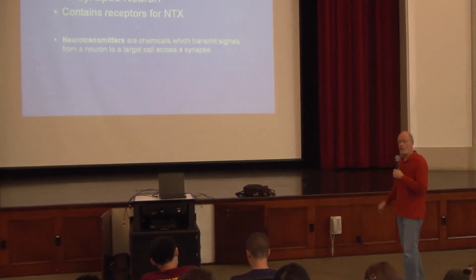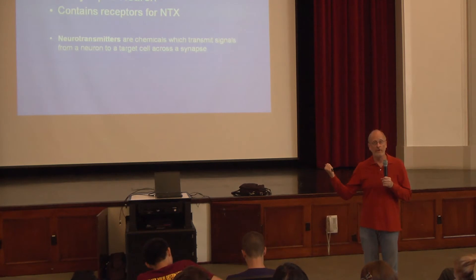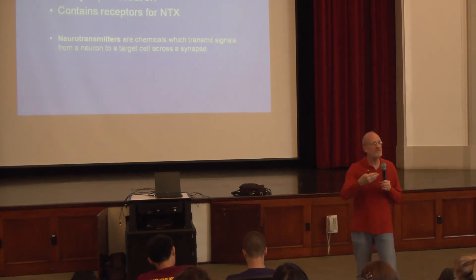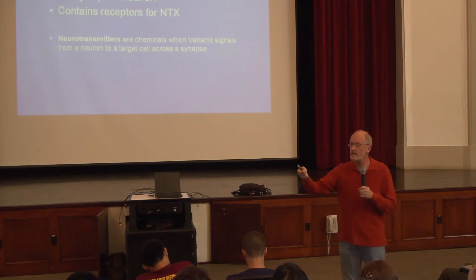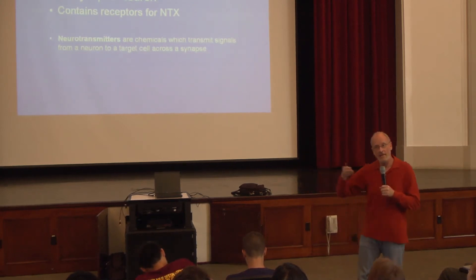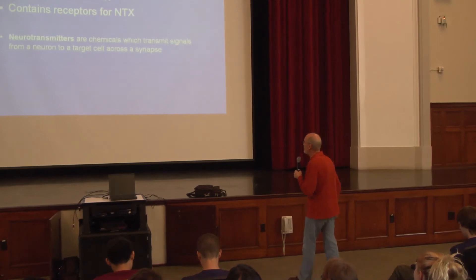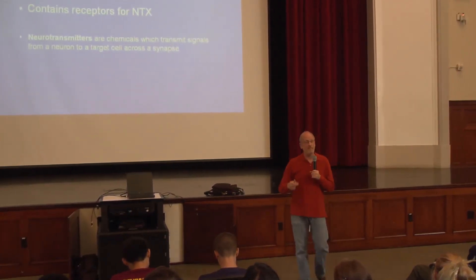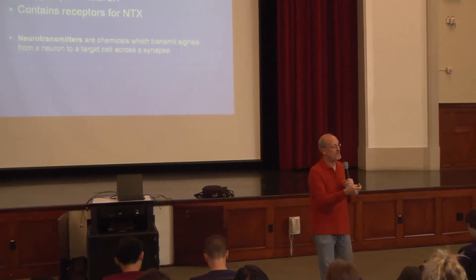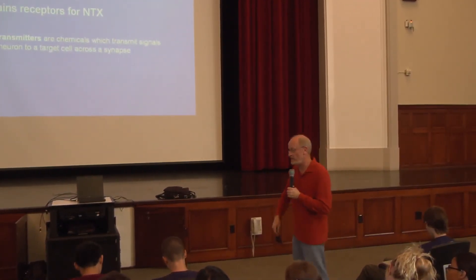Terminology: on the output end of the first neuron, that's called the pre-synaptic neuron. The target is called the post-synaptic neuron. Neurotransmitters are released between the two of them, and there are very specific receptor proteins in the membrane of the post-synaptic or target cell that change the flow of ions.